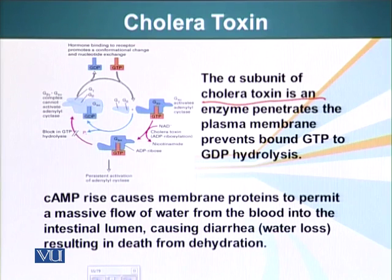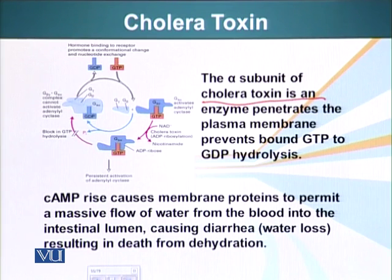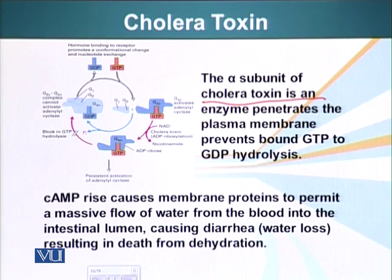Remember that G-proteins are initially bound to GDP. Once activated, they lose their GDP, GTP attaches to the alpha subunit, and the alpha subunit dissociates. Once dissociated and bound to GTP, the alpha subunit has a short time window during which it converts GTP to GDP and becomes inactive — and during that window it can activate adenyl cyclase.